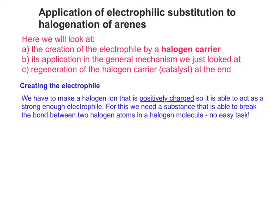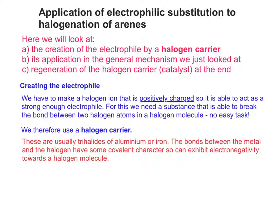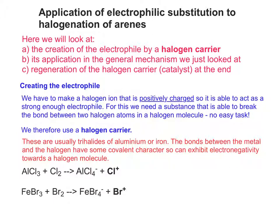To do this, we need a substance able to break the bond between two halogen atoms in a halogen molecule, which is quite difficult. These are usually trihalides of aluminium or iron. The bonds between the metal and the halogen have some covalent character, so they can exhibit electronegativity towards a halogen molecule. As you can clearly see, the halogen-halogen bond is broken, producing either AlCl4- or FeBr4-. It's worth pointing out which is the halogen carrier and which is the electrophile.